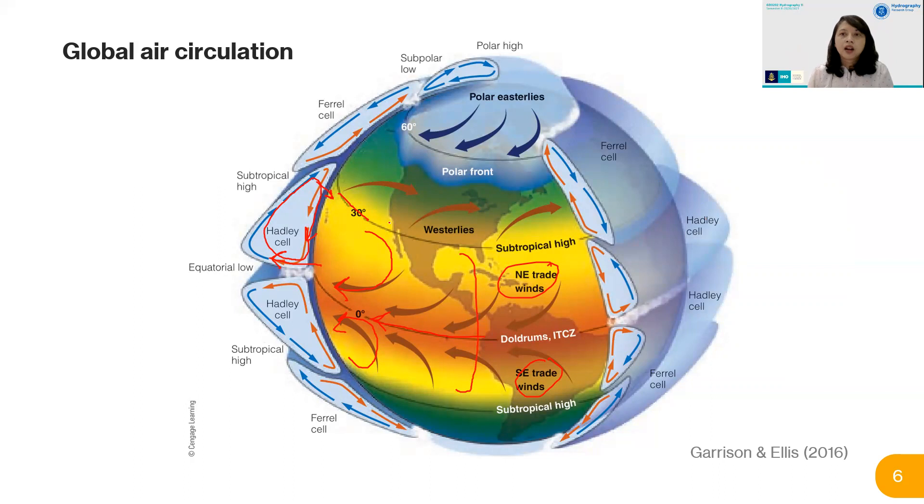Above 30 degrees, you have westerlies. Why is it called westerlies? Because when we're talking about wind, we're talking about where it came from. But when we're talking about current, we're talking about where it goes. That's why it's called westerlies—because it comes from the west. And this is called easterlies because it's coming from the east.